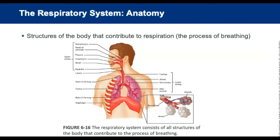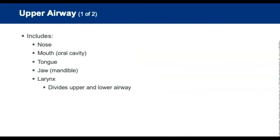Now we're in the respiratory system. The respiratory system is responsible for breathing — respiration and exchange of oxygen and carbon dioxide within the lungs. It is divided into the upper and lower respiratory systems. The upper system consists of the nose, mouth, tongue, jaw, and larynx. The larynx is the dividing point between upper and lower. The upper airway also includes the pharynx, trachea, and epiglottis.